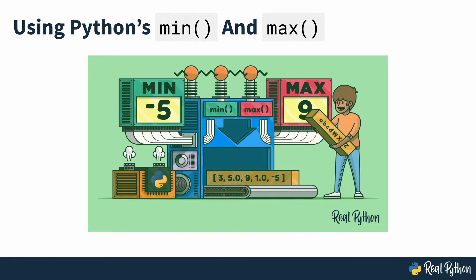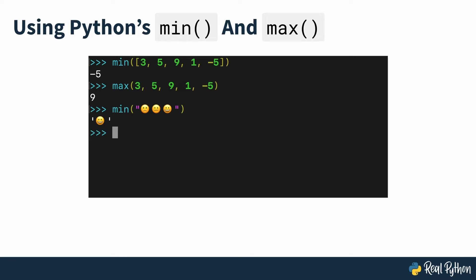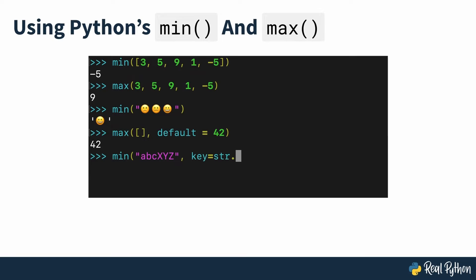Python's min and max. Python's built-in min and max functions come in handy when you need to find the smallest and largest values in an iterable or series of regular arguments. Even though these might seem like fairly basic computations, they turn out to have many interesting use cases in real-world programming. You'll try out some of those use cases here.